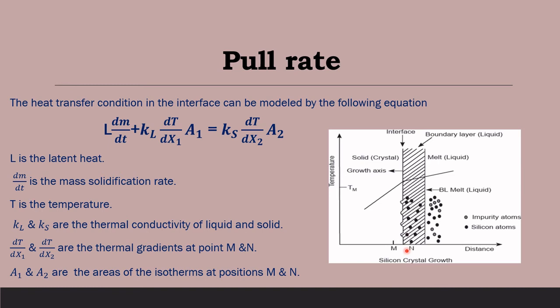And A1 and A2 are the areas of the isotherms at positions M and N. So, this is the pull rate equation. In this equation or by using this equation, we can easily identify the pull rate.